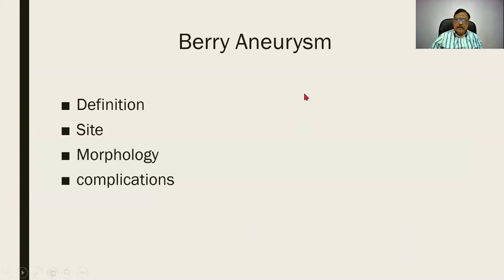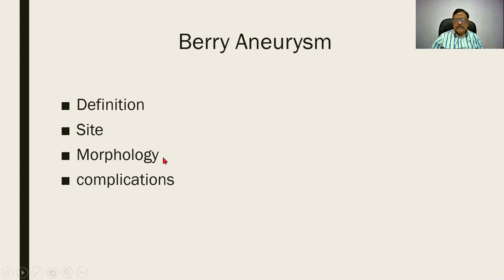Another aneurysm we should have in mind is the berry aneurysm — very frequently asked as a university question. It is called a berry aneurysm because it resembles a berry, a fruit that is hardly about 1.5 centimeters in diameter. The site where we can get it is usually the bifurcation of the blood vessel in the circle of Willis. Morphology: normally about 1 to 1.5 centimeters, sometimes it can go as large as 5 centimeters, and rupture eventually, leading to a subarachnoid or an intracranial hemorrhage.